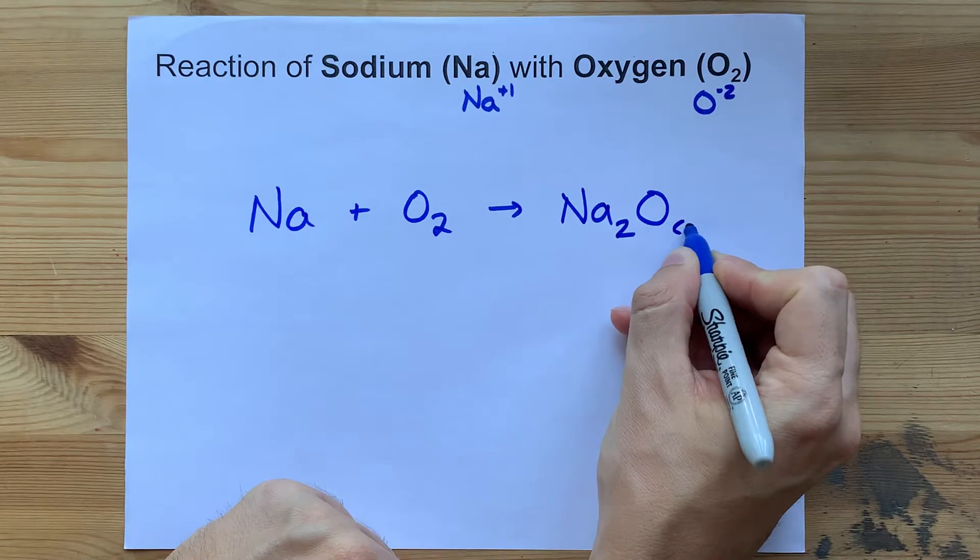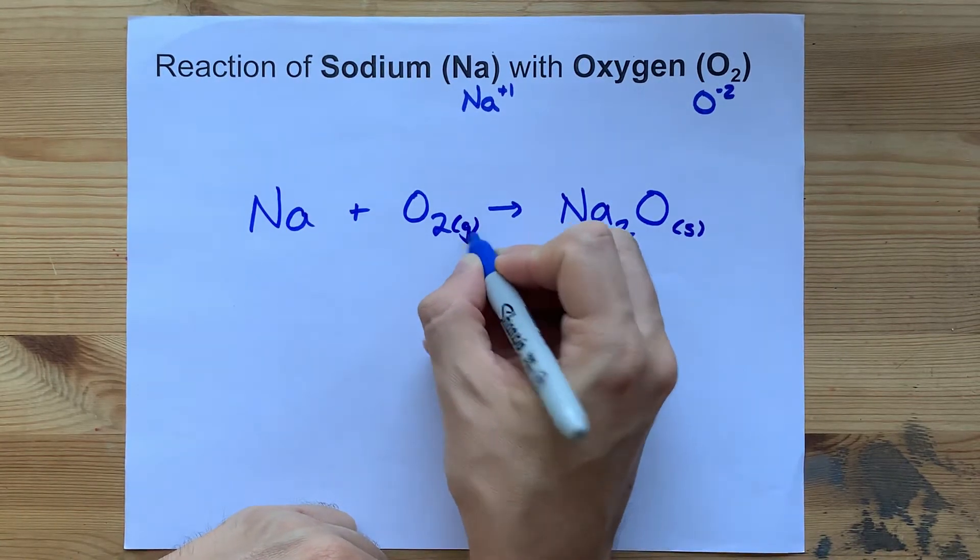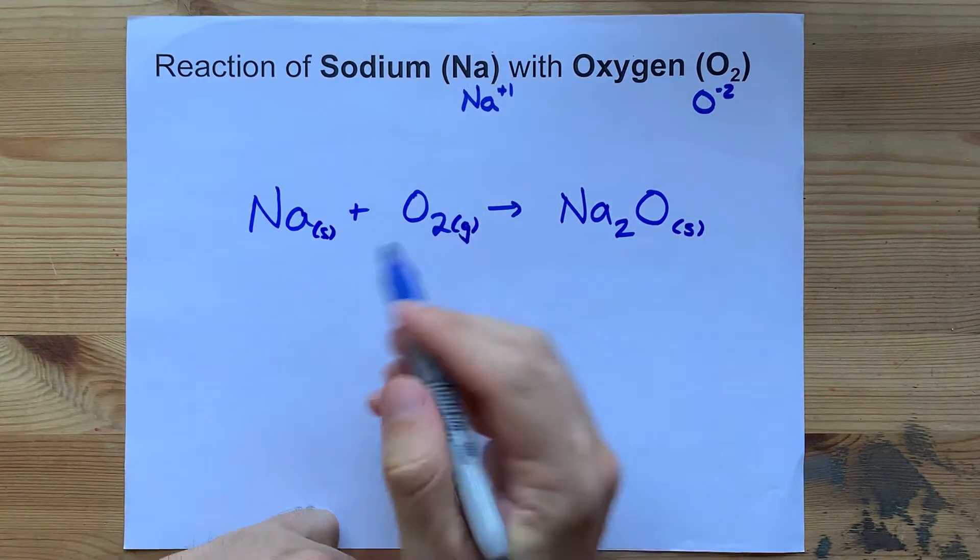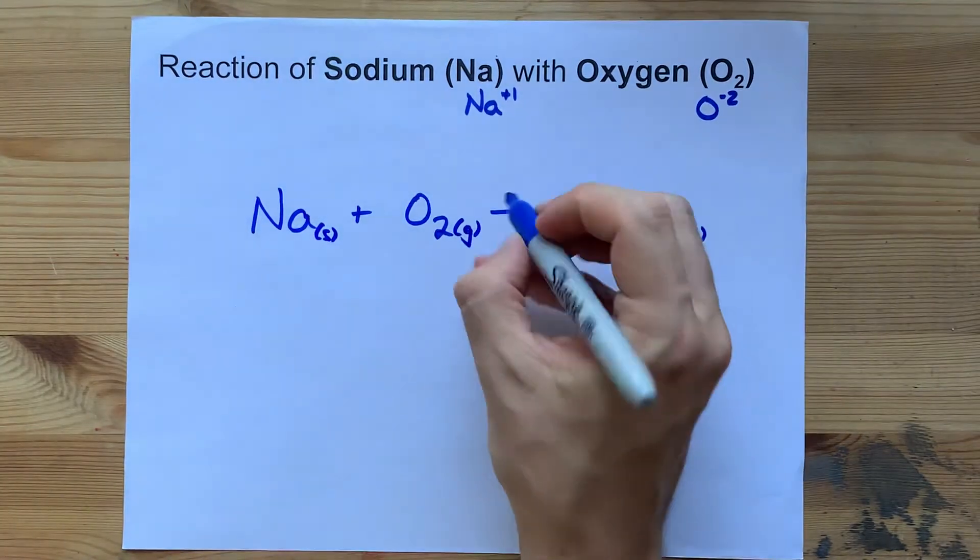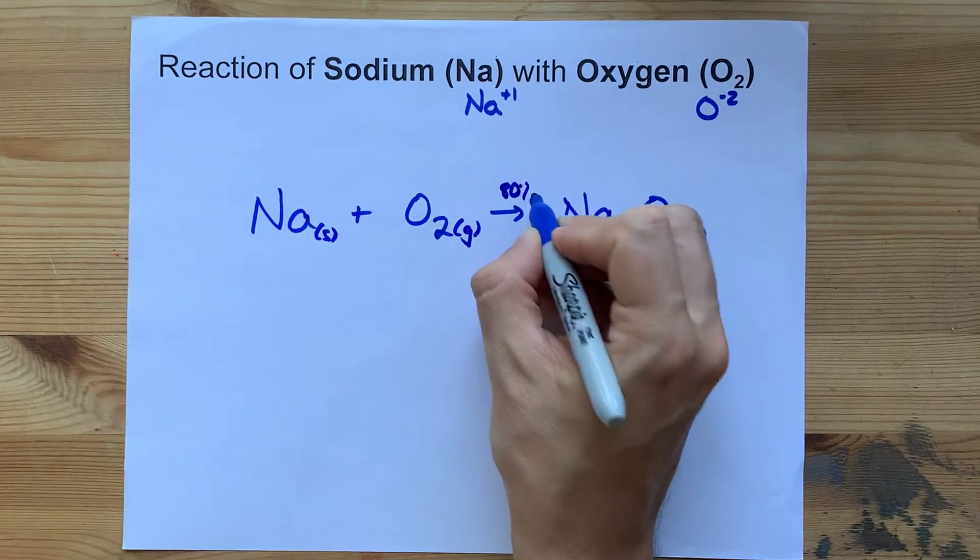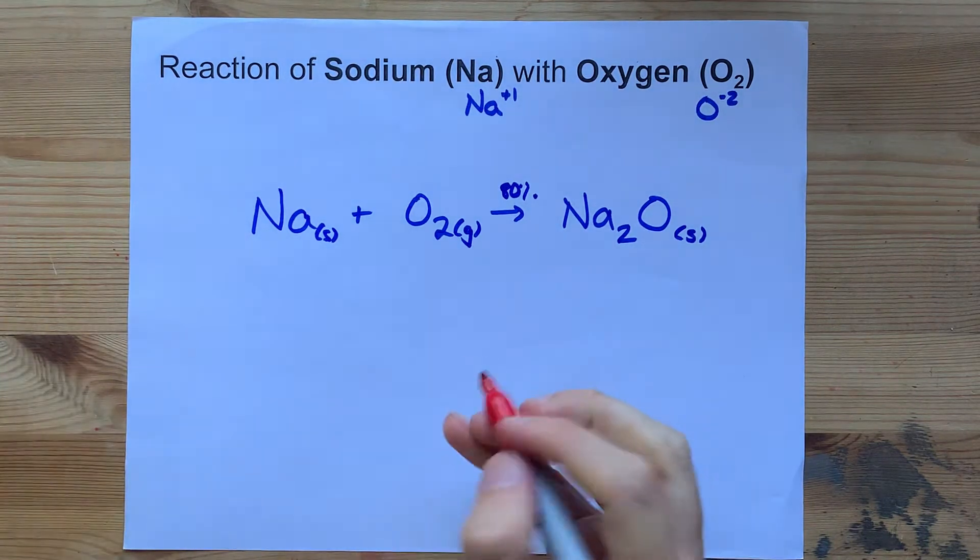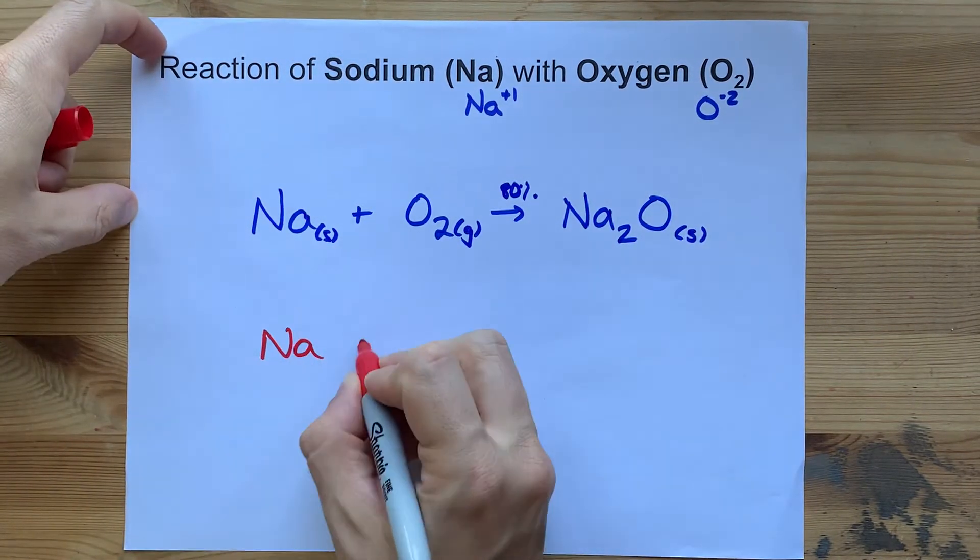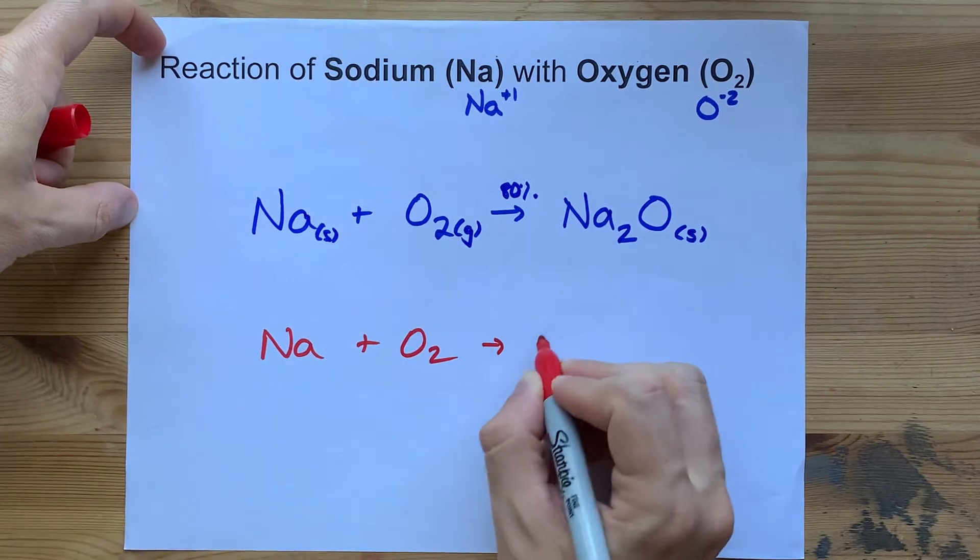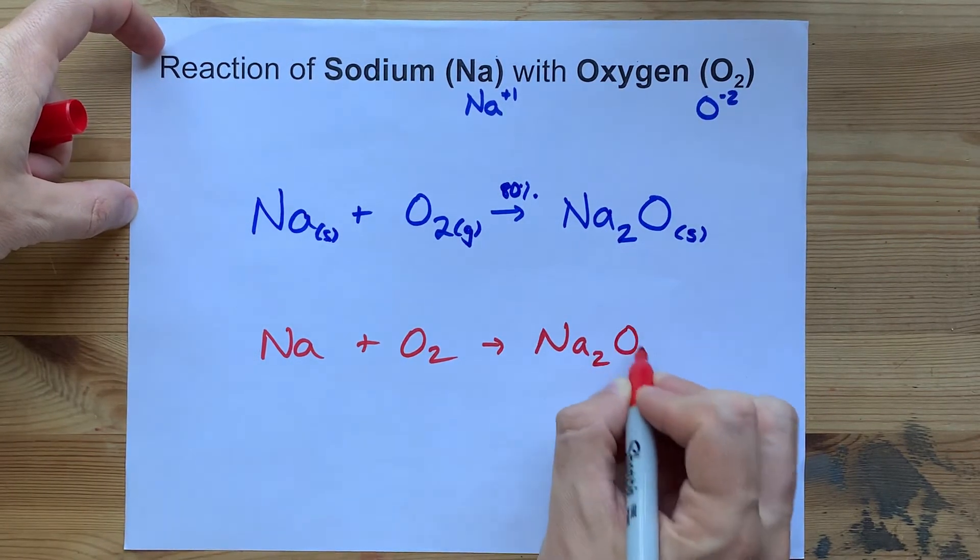The actual truth is a little bit messier. When you react sodium with oxygen, you end up with only about 80% of it becoming sodium oxide. The rest actually reacts to make sodium peroxide, Na2O2.